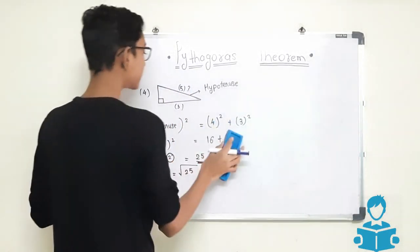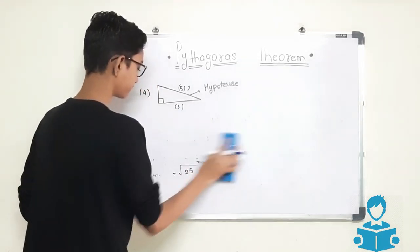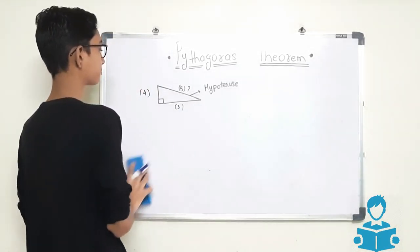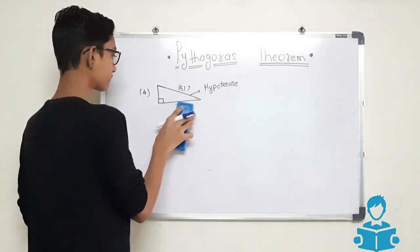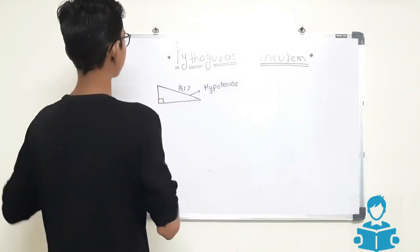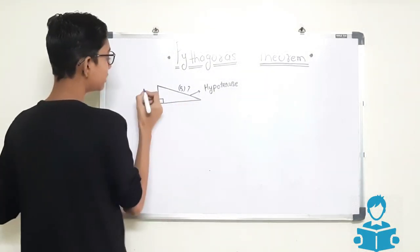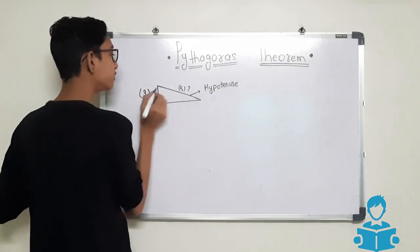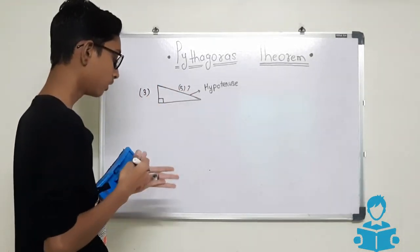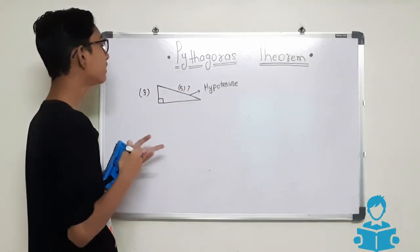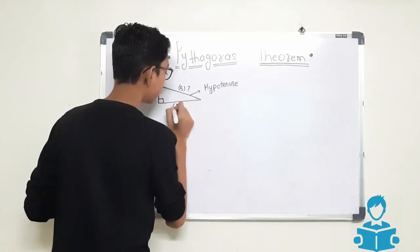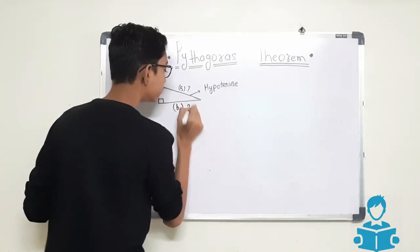Now we will take one more example. If you have been given that the value of A is 3 and you have also been given the value of hypotenuse. We have to find the value of B.